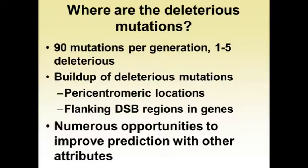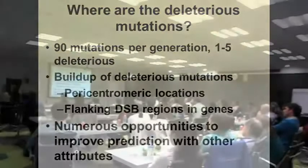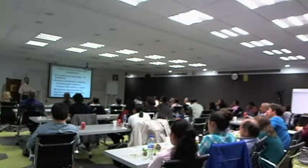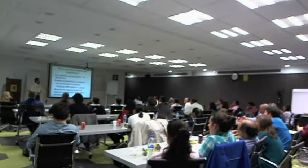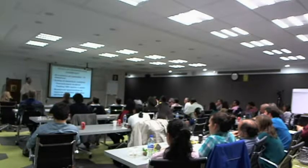Where are the deleterious mutations in the maize genome? There are about 90 mutations per generation; one to five of them are deleterious. The buildup of deleterious mutations is likely in pericentromeric locations and also flanking double-stranded break regions. With this knowledge, there are numerous opportunities to improve prediction of which are the most deleterious mutations. We're going through and adding several hundred other genomic attributes to try to identify exactly how deleterious each mutation is in trained models.